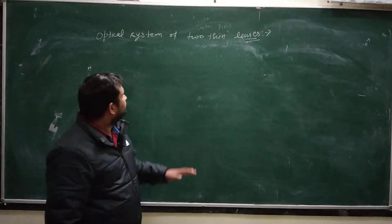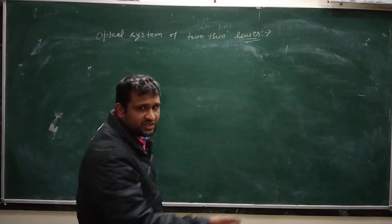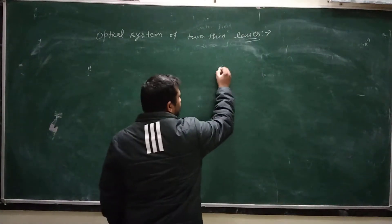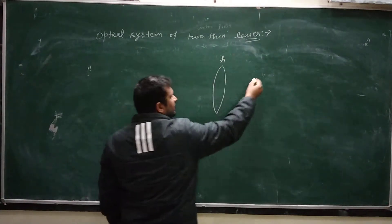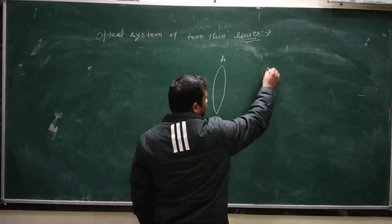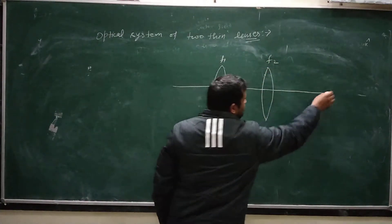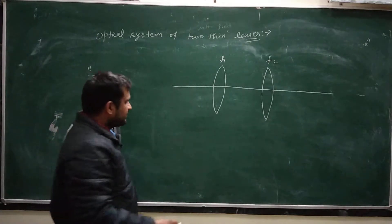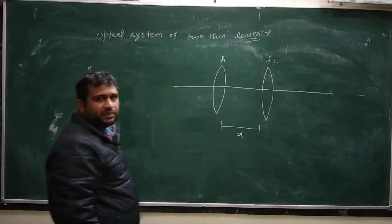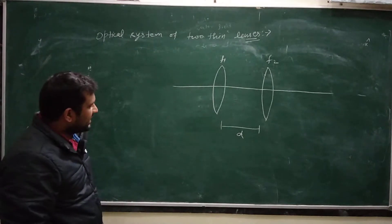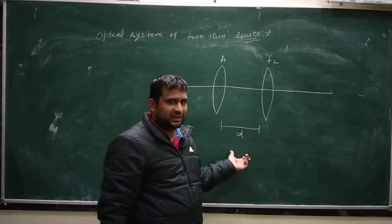Hello students. Today we will study the optical system of two thin lenses. Let us consider two thin lenses: one of focal length f1 and another of focal length f2. They are placed coaxially to each other, with a separation D between these two thin lenses. We have to derive the formula for the focal length of the combination of these two thin lenses.